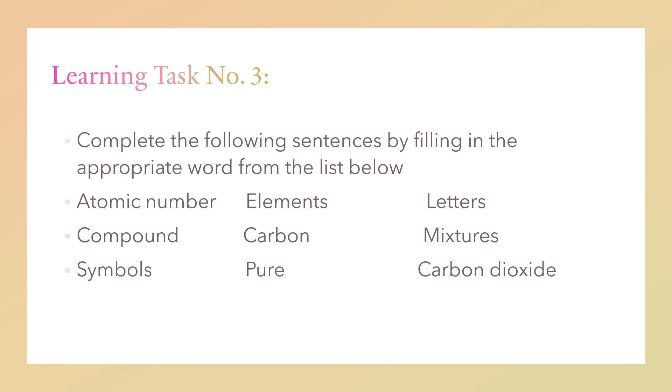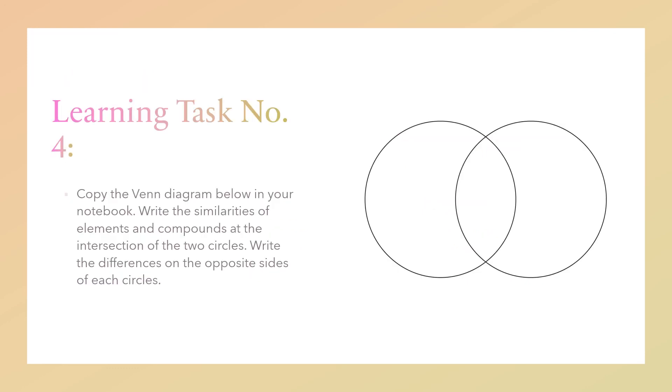Learning task number three. Complete the following sentences by filling in the appropriate word from the list below. These are the choices. The question is in your module already, the learning task number three. You will choose from this word pool or the word listed here. There are words there that are not included in your answer, so you need to choose carefully.